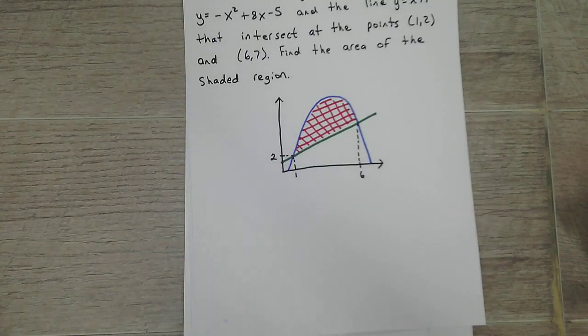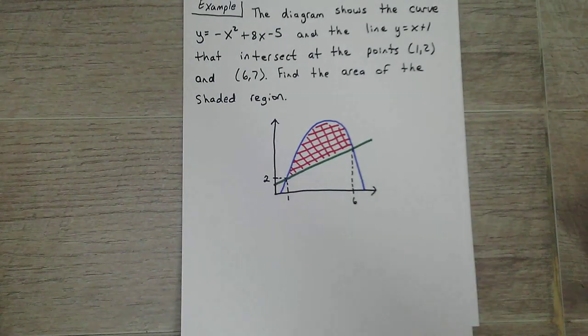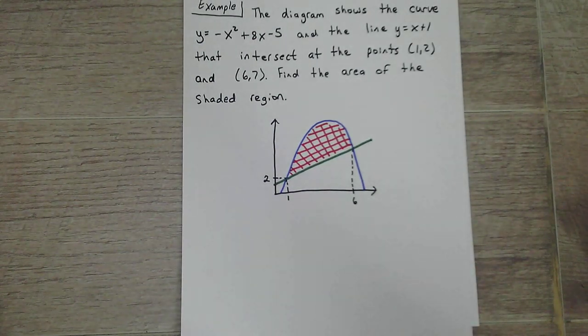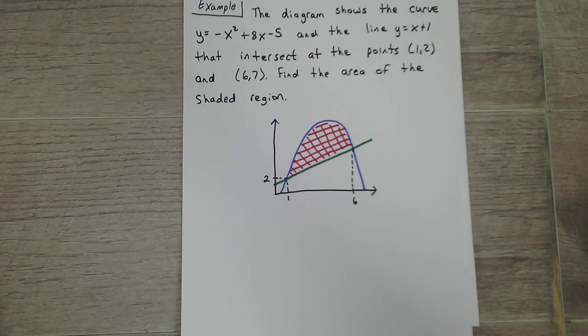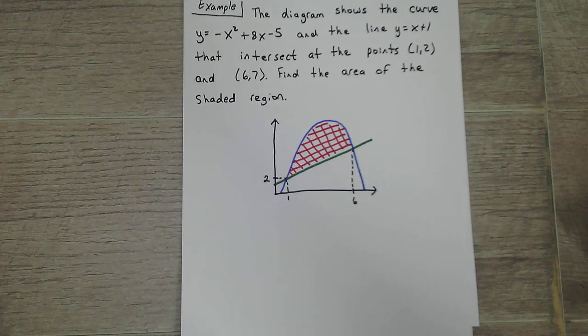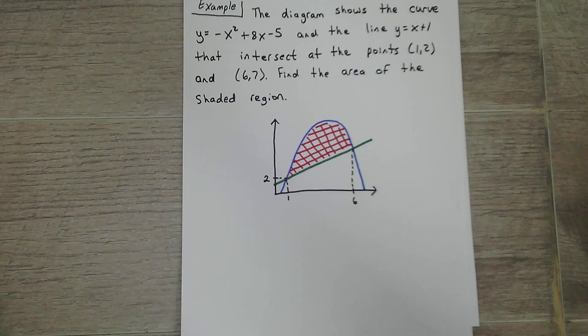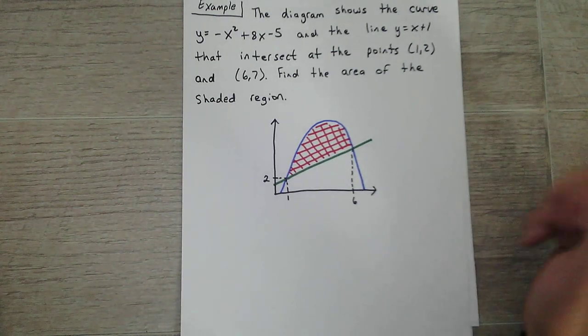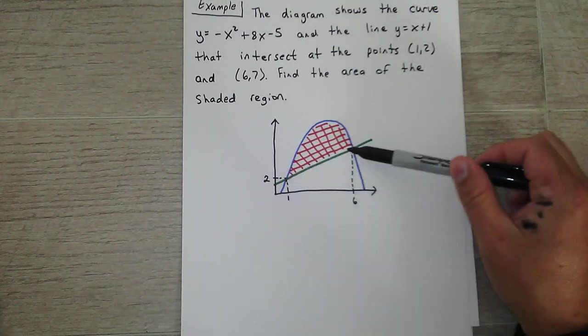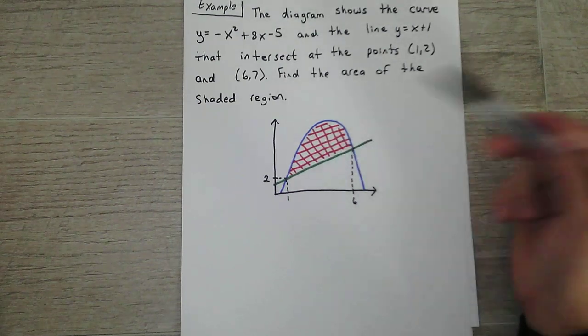Okay, so let's do an example. The diagram shows the curve negative x squared plus 8x minus 5 and the line x plus 1. They intersect at these two points, here and here. Find the area of the shaded region. That's the red part.